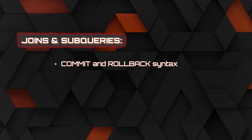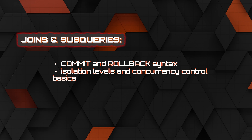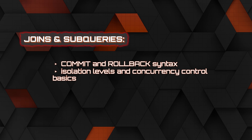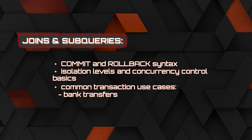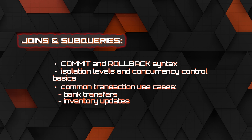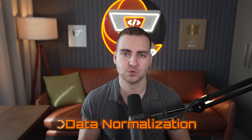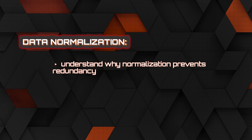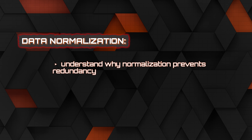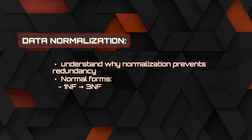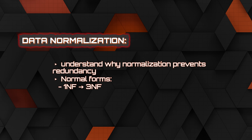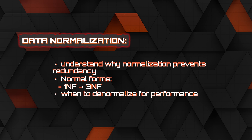Next, look at transactions — using COMMIT and ROLLBACK syntax, different isolation levels, and concurrency controls. Understand common transaction use cases like bank transfers and inventory updates. Then move to data normalization, which helps prevent redundancy. You have different normal forms — 1NF, 3NF — and you need to understand what those are and when to denormalize for performance.